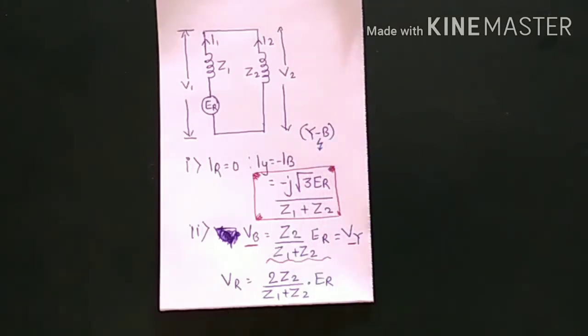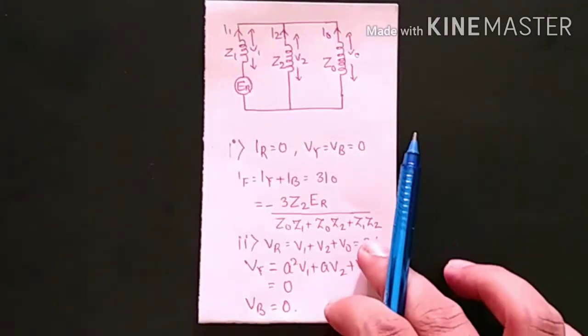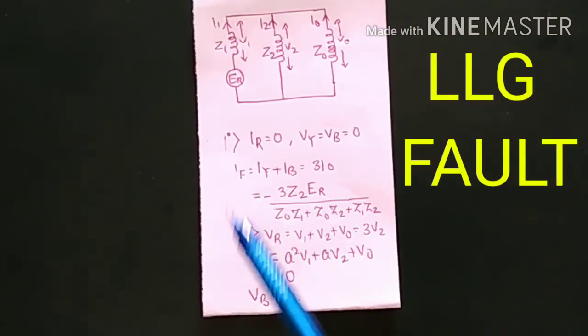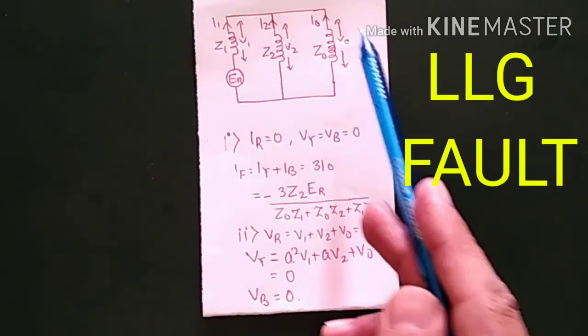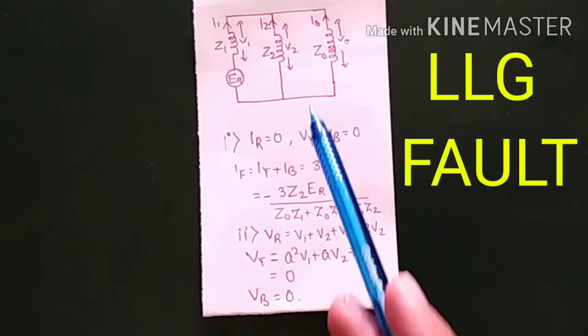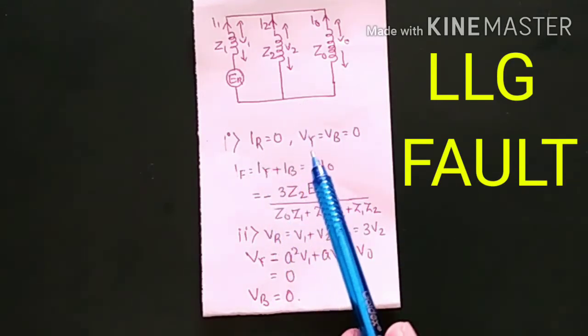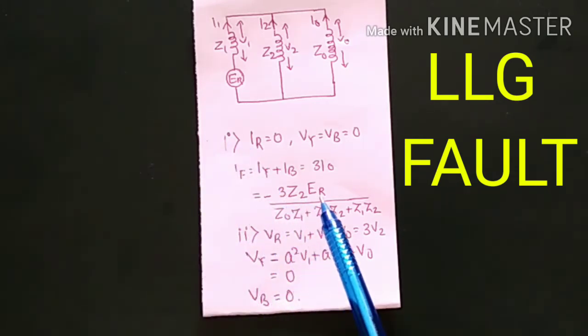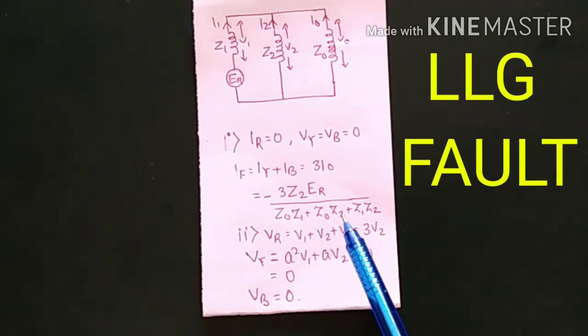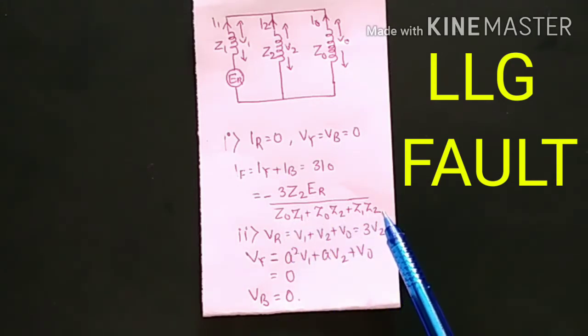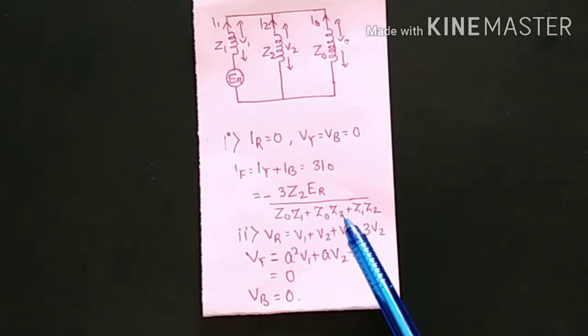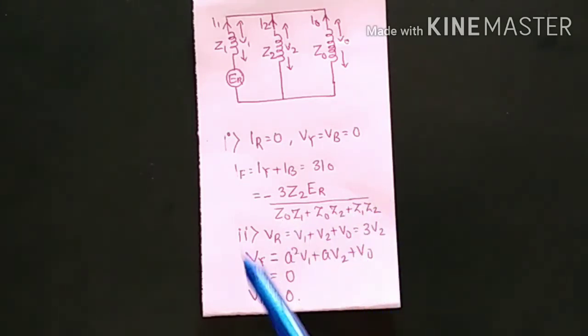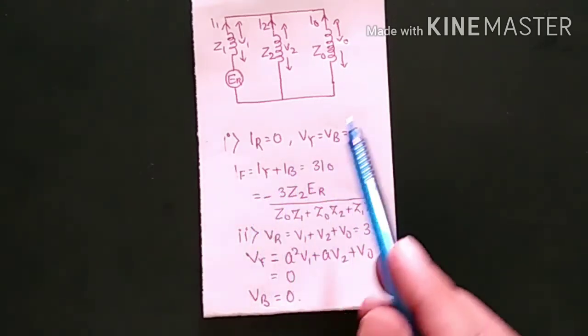The last one is the double line to ground fault. The diagram shows Z1, Z2, and Z0 drawn in their respective configuration. Here IR = 0 and VY = VB = 0. The formula for the fault current is: −3Z2 · ER / (Z0·Z1 + Z0·Z2 + Z1·Z2), which can also be written as Z0·Z1 + Z1·Z2 + Z2·Z0.